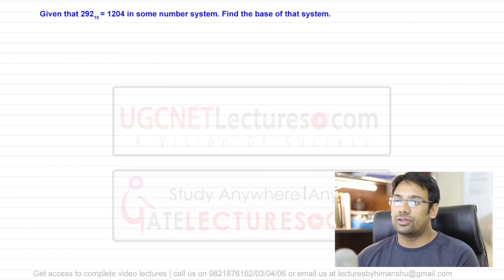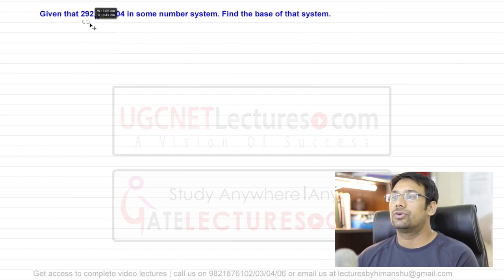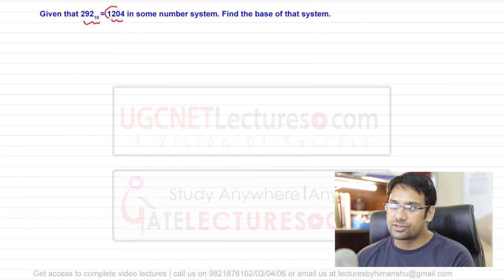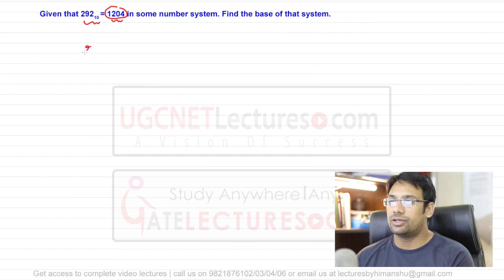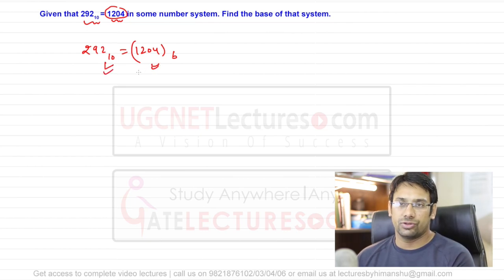The next question: 292 (base 10) is equal to 1204 in some number system. We need to find the base of that number system. Assuming the base is b, we write 292 (base 10) = 1204 (base b). Since 292 is already in base 10, we convert 1204 (base b) to base 10.